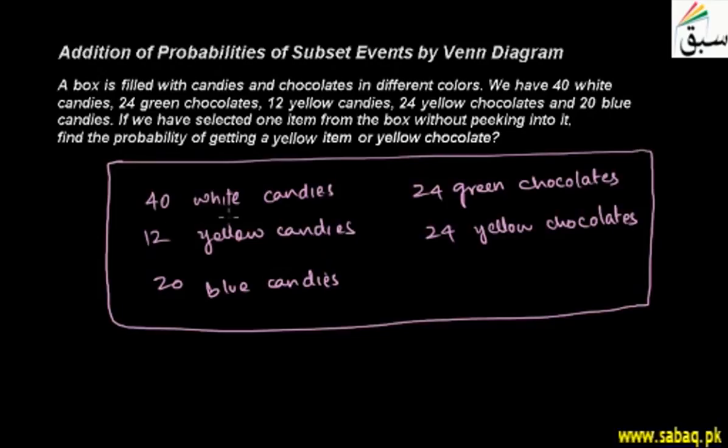Now let's calculate the total. 24 plus 24 is 48, 48 plus 12 is 60, 60 plus 40 is 100, 100 plus 20 is 120. This means our sample space n(S) is 120.